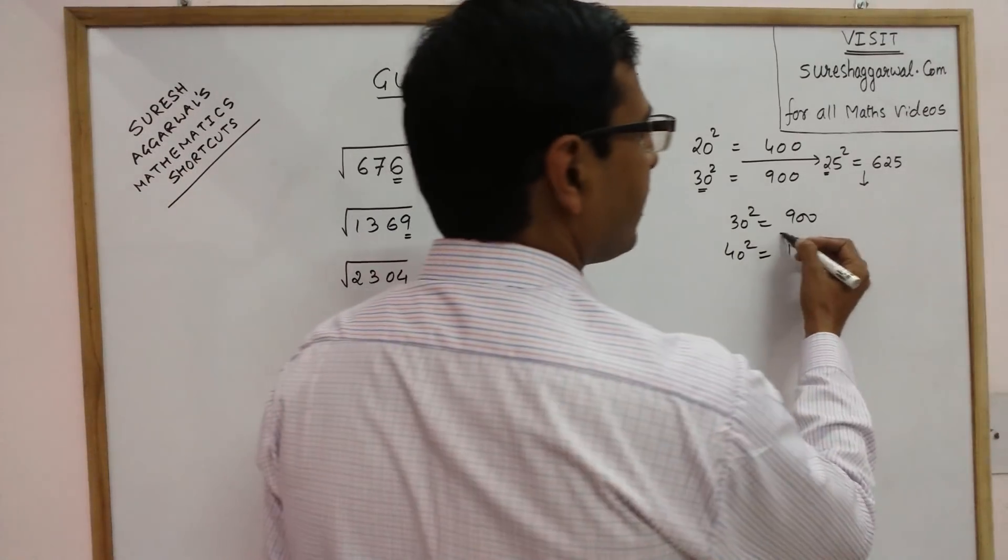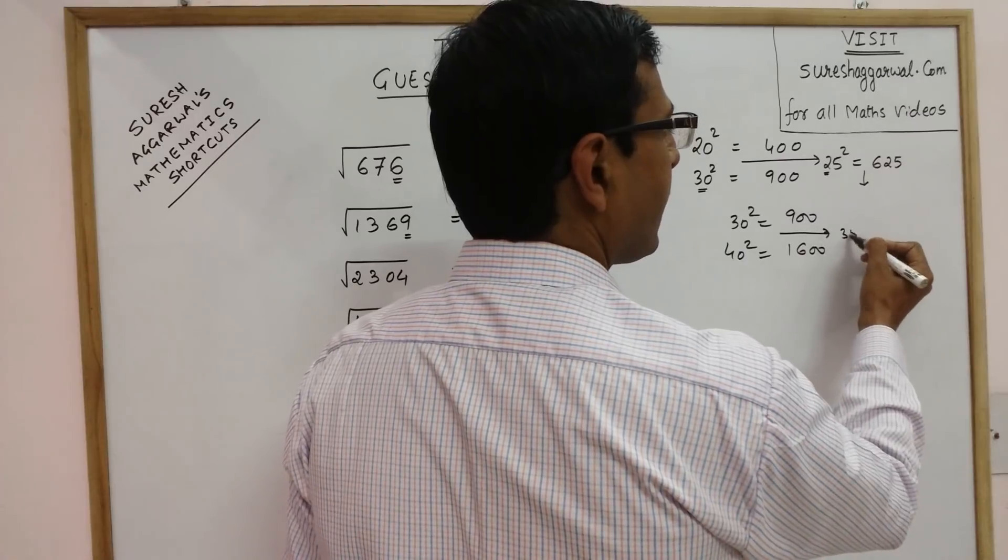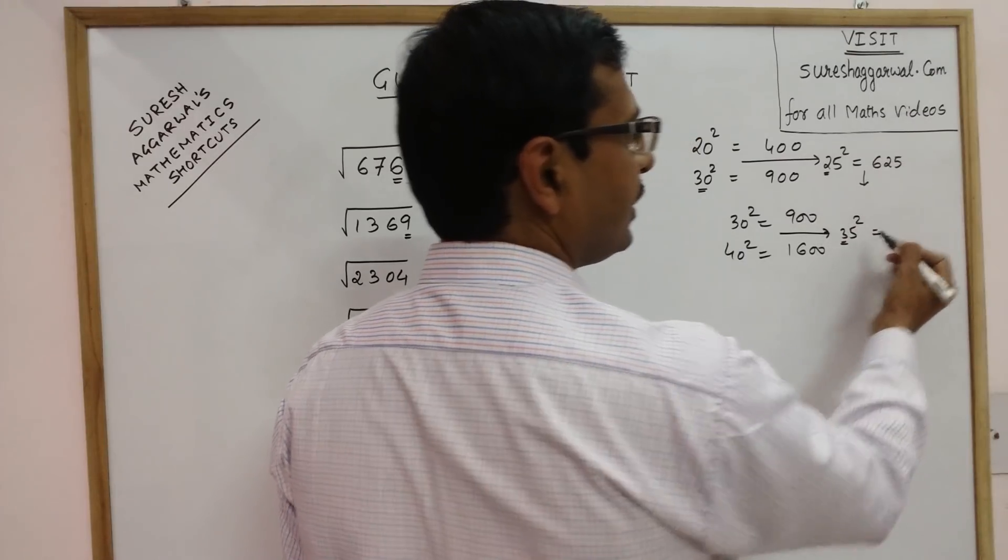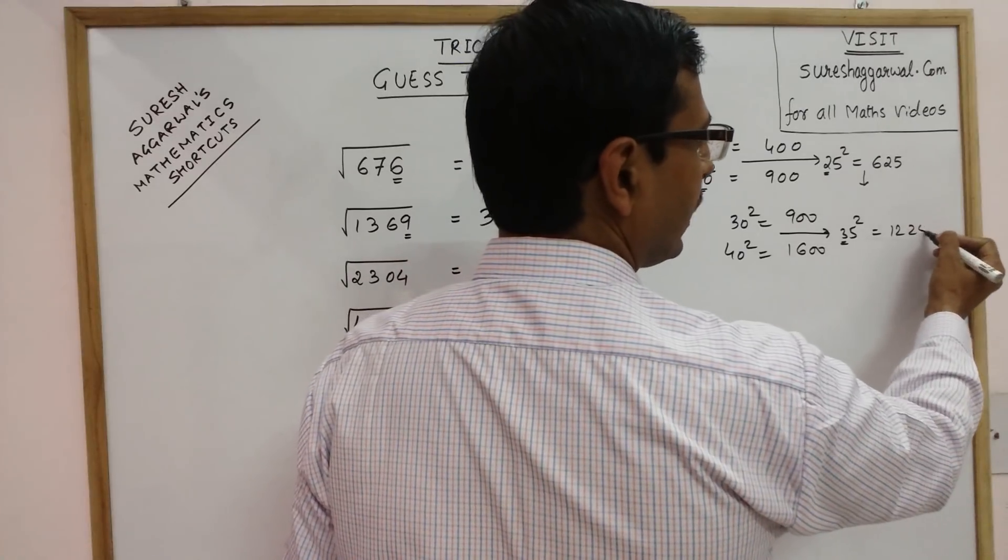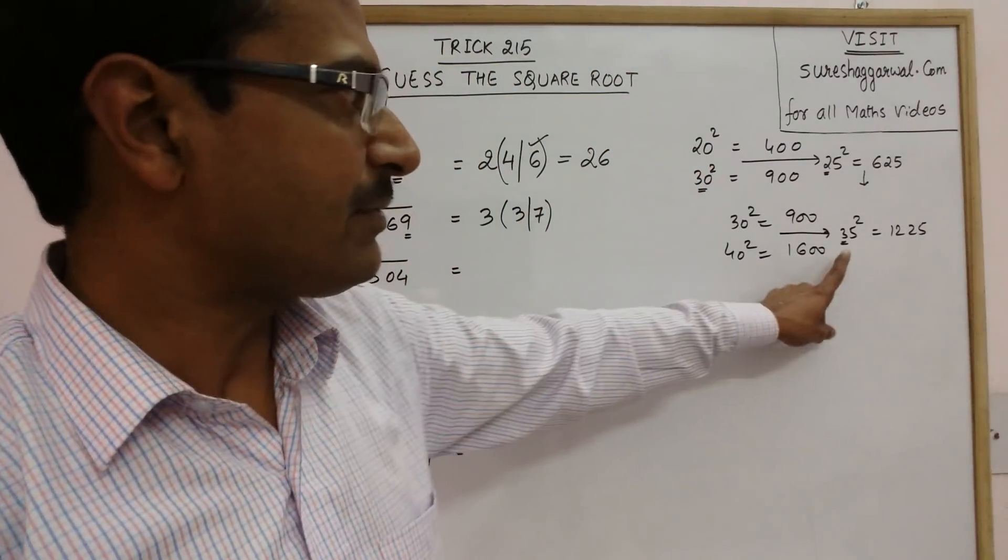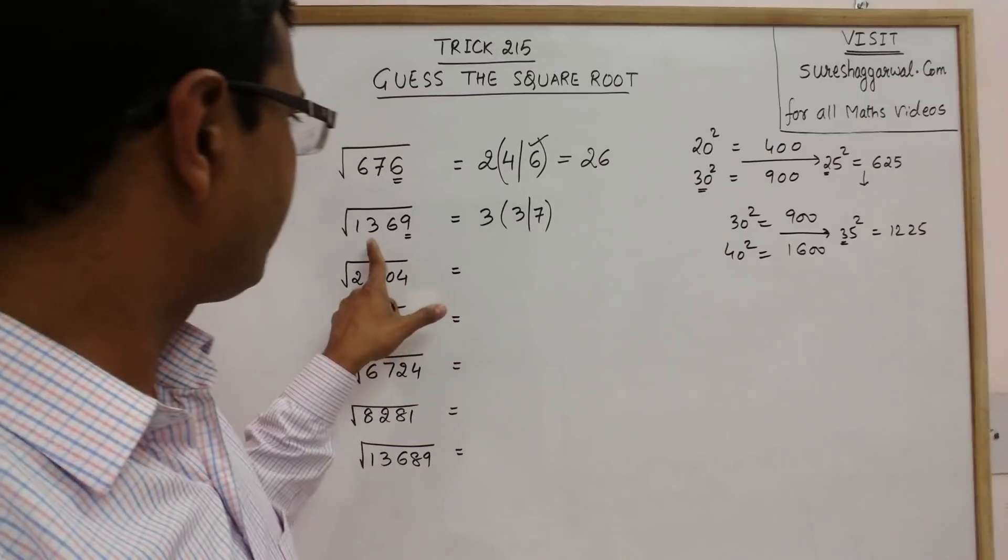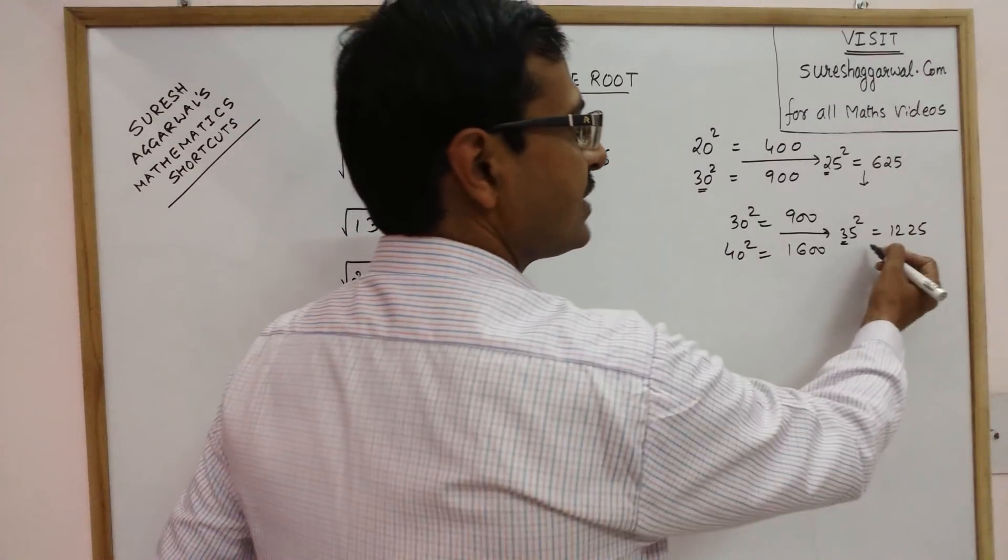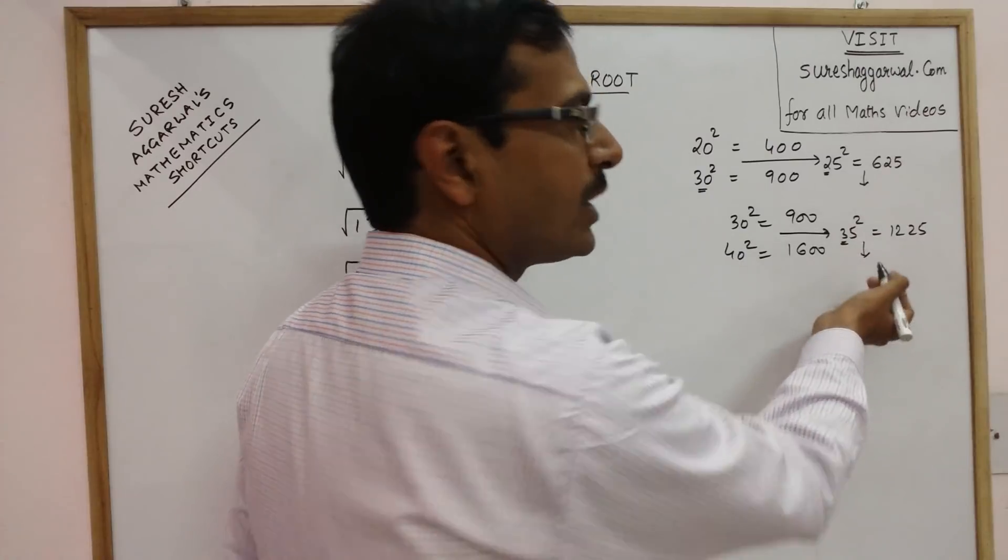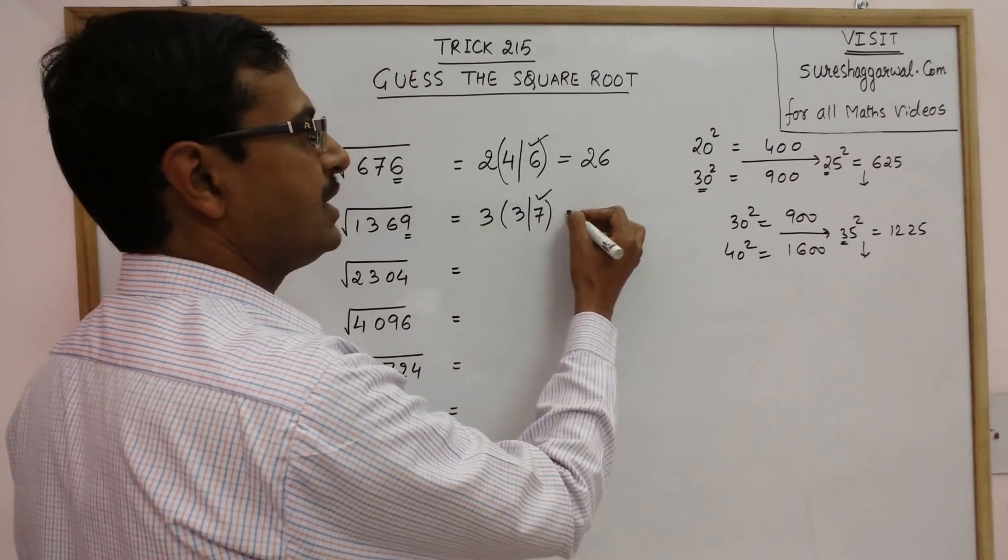Now see the intermediate number, 35. 3, 3 into 4 consecutive number 12, and put 25. So 35 square is 1225. Now see this number, this is greater. 1369 is greater than this number. So our answer will be more than 35. So answer is 37.